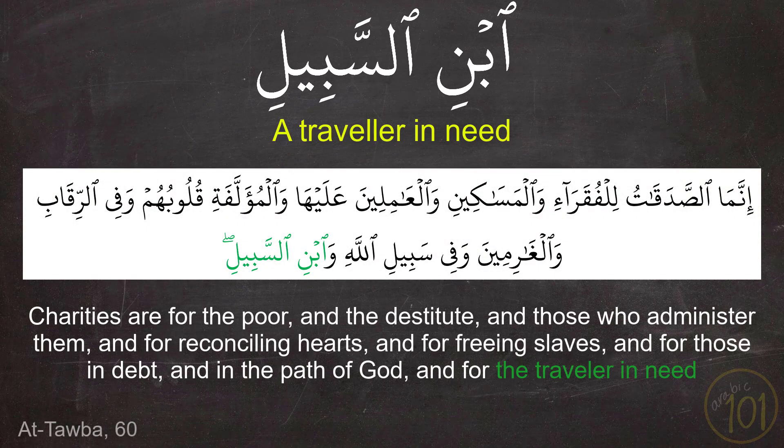The Quranic example shown is from Surah At-Tawbah, listing the recipients of Zakat: إِنَّمَا الصَّدَقَاتُ لِلْفُقَرَاءِ وَالْمَسَاكِينِ وَالْعَامِلِينَ عَلَيْهَا وَالْمُؤَلَّفَةِ قُلُوبُهُمْ وَفِي الرِّقَابِ وَالْغَارِمِينَ وَفِي سَبِيلِ اللَّهِ وَابْنِ السَّبِيلِ — which includes the traveler in need (ابن السبيل).